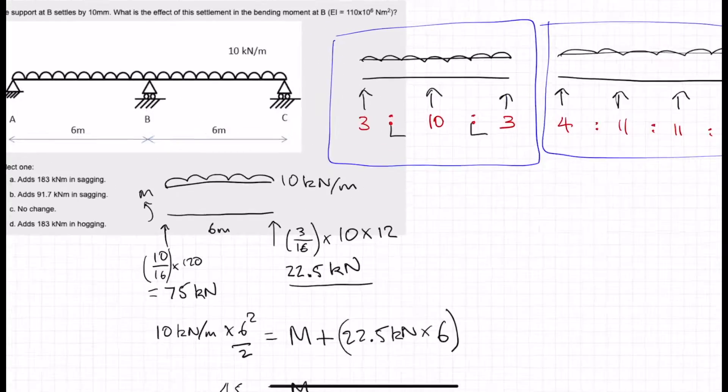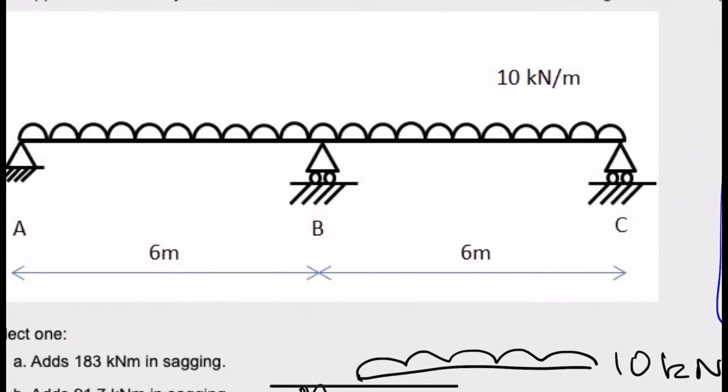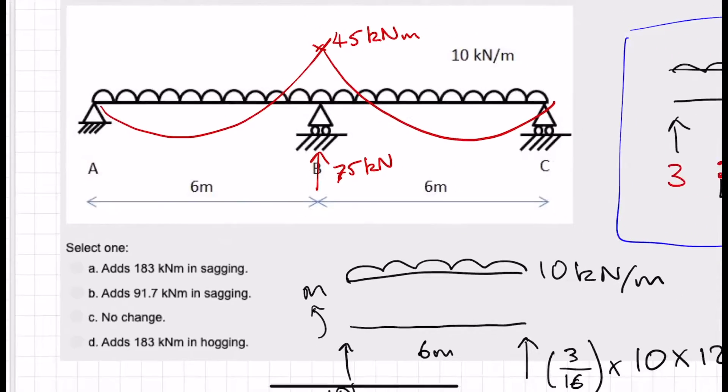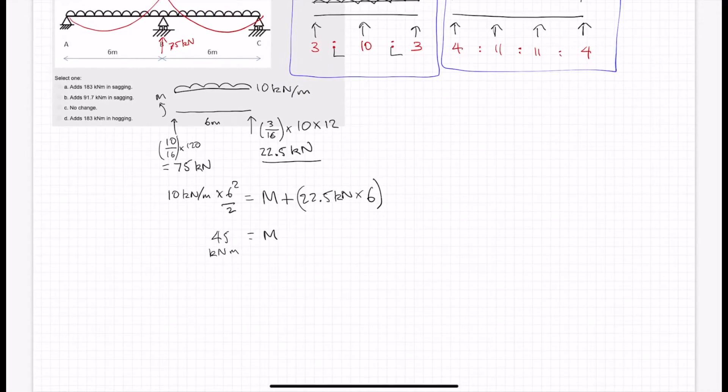Okay, so let's just make a note of that, so it's currently at 45 kilonewton meters. And that was 75 kilonewtons. Okay, now what happens when it settles?